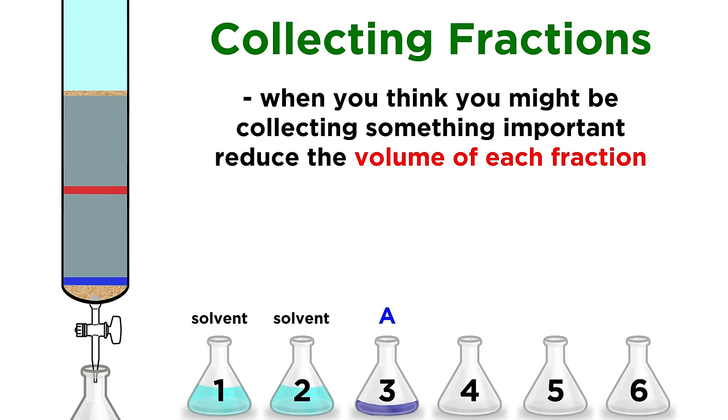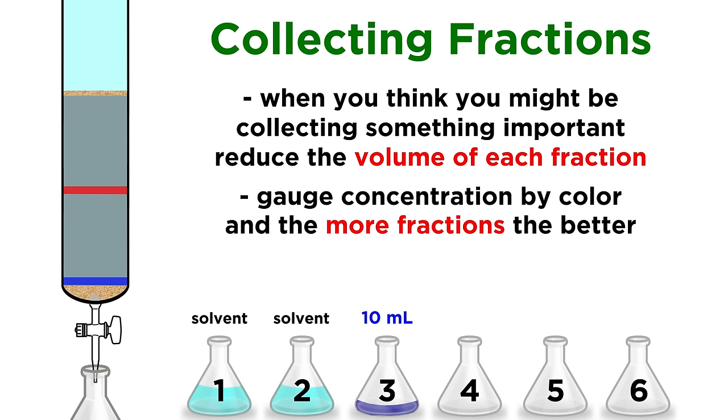When it looks like we are collecting organic material, we want to get fractions of a smaller volume, maybe ten milliliters, or even less, to maximize our chances of a clean separation. We can gauge the concentration by color. But don't be afraid to collect lots of fractions if you need to, even up to twenty or thirty is no problem provided you have enough flasks to do so.